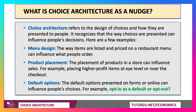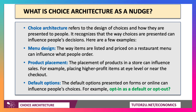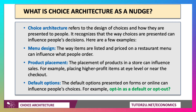Some examples: if you think about menus in a restaurant, the way items are listed and priced, the order in which people can choose off a menu can influence what people eventually choose to buy. The placement of products in a supermarket can influence sales — if you place higher profit items at eye level or near the checkout, for example.